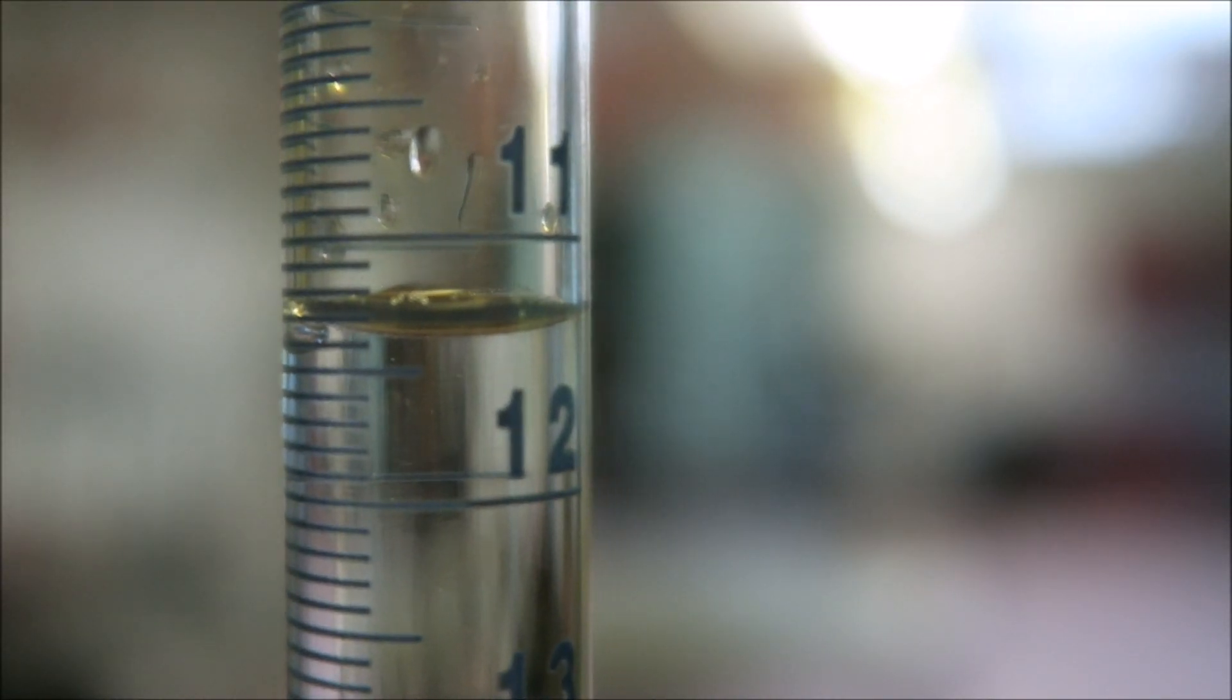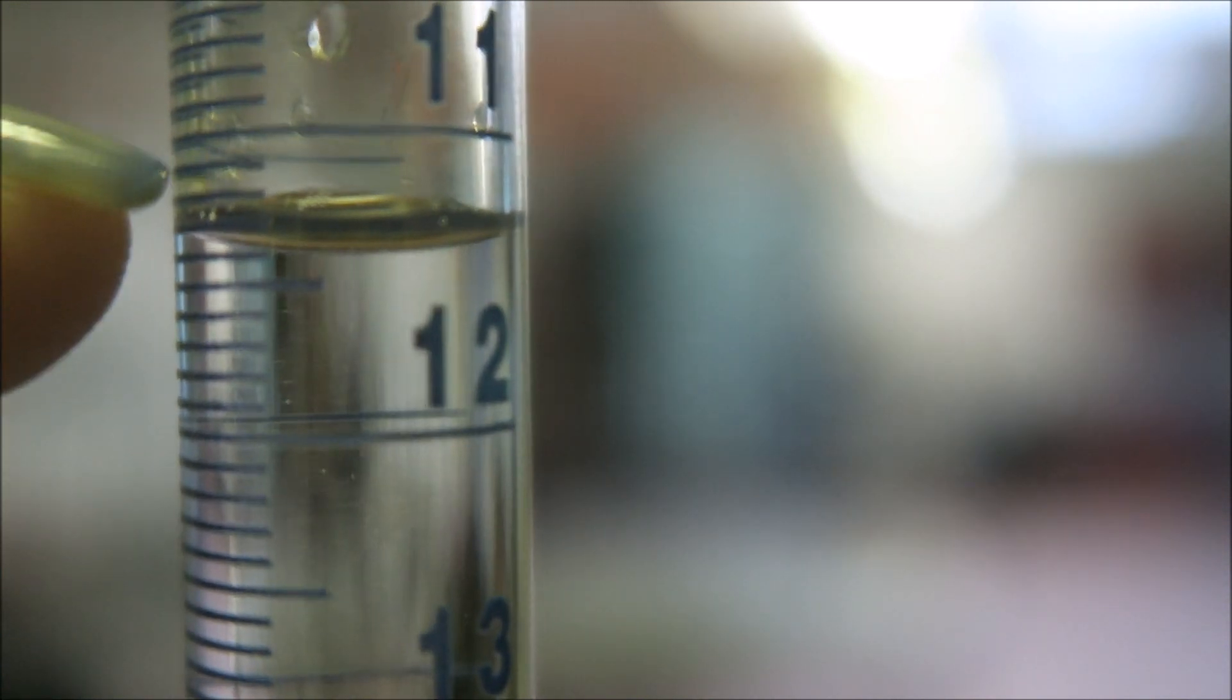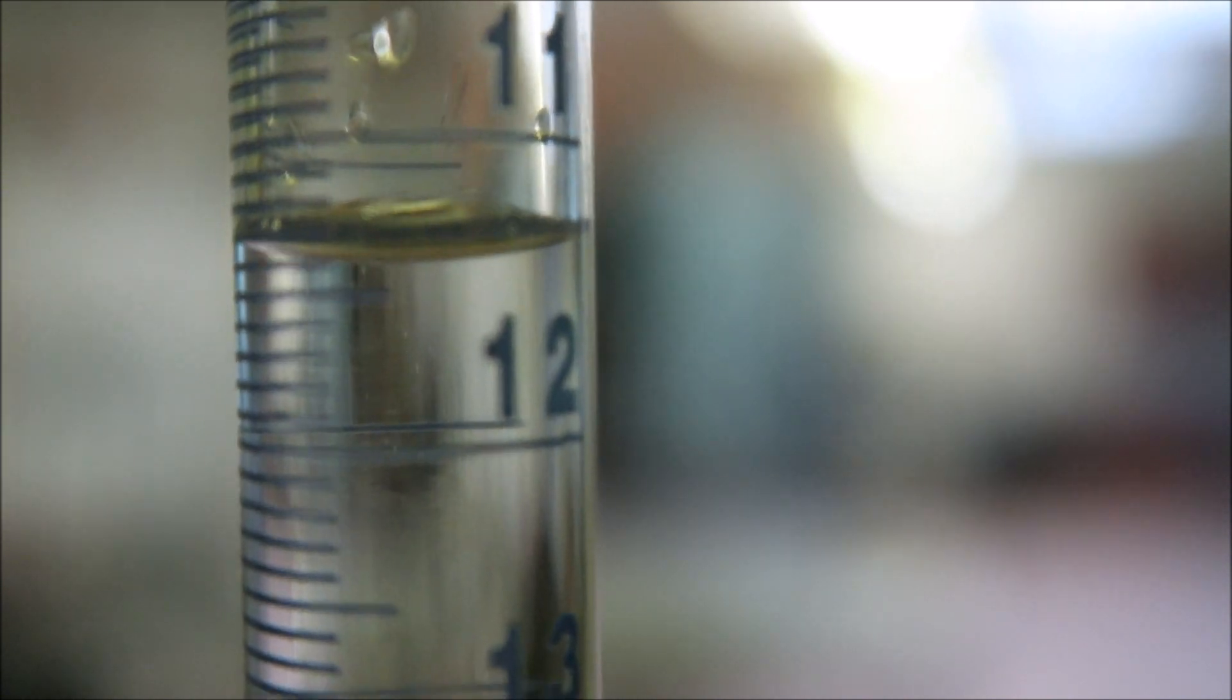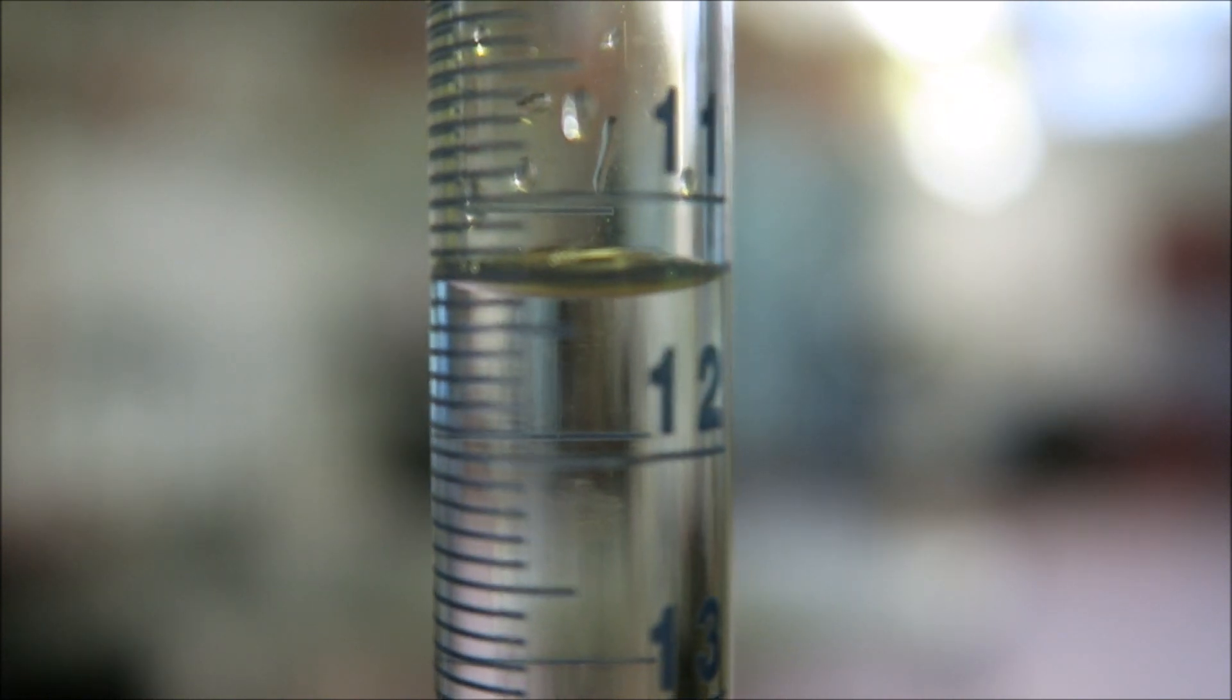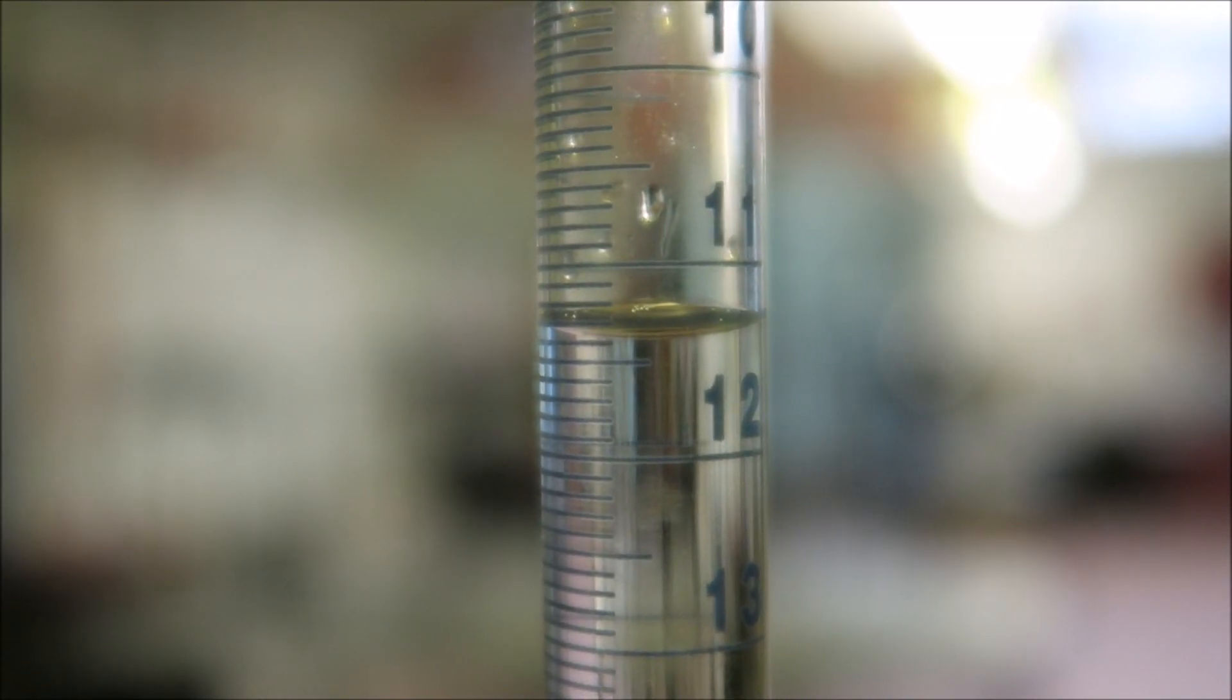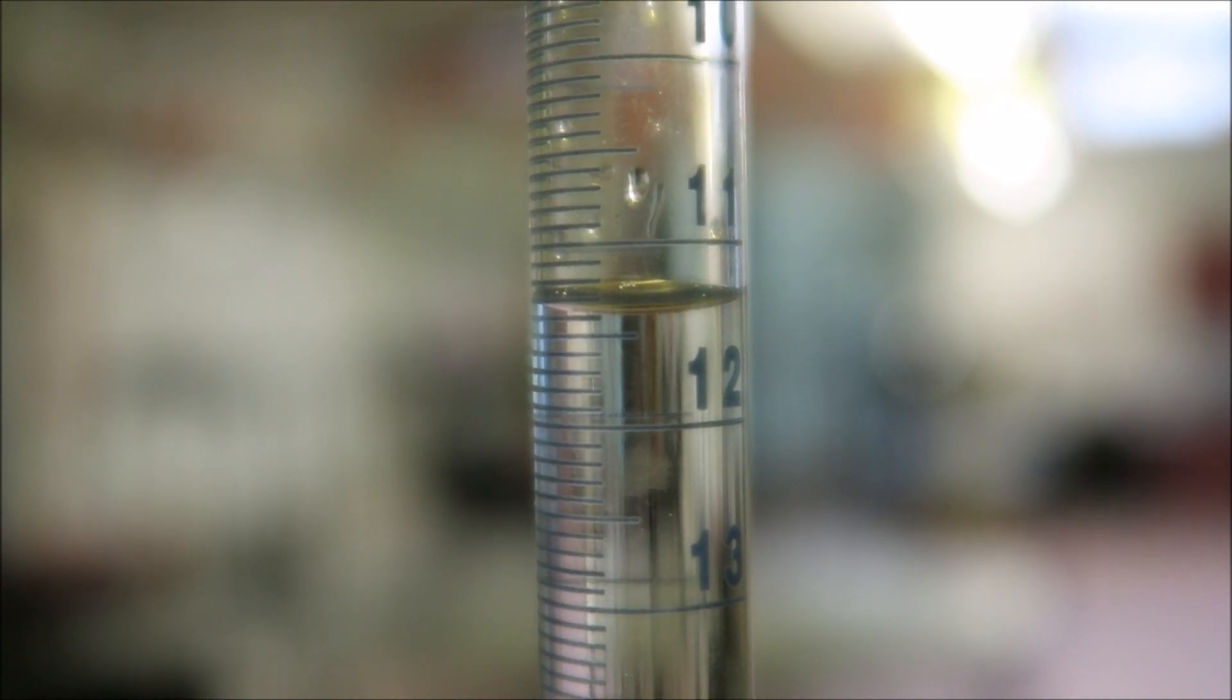When you read a burette, you need to look for the bottom of the meniscus. You can see here is 11, here is 12, here is 0.5. So this is 11.1234, and this is exactly 11.4. In a titration on a burette, you can see whether it's exactly on the number or between the numbers. This is the level of accuracy we are aiming for in a titration. You need to do it to two decimal places, so this would be 11.40.